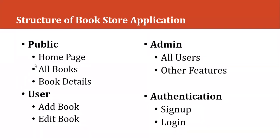This is the basic structure of this application. In the public section we will add a home page, all books, and a book details page. Logged-in users can add and edit their own books. The admin section will show how many users are in the application. For authentication we will use sign up, login, change password, forget password, email verification, and more. Based on these features we can create multiple modules.